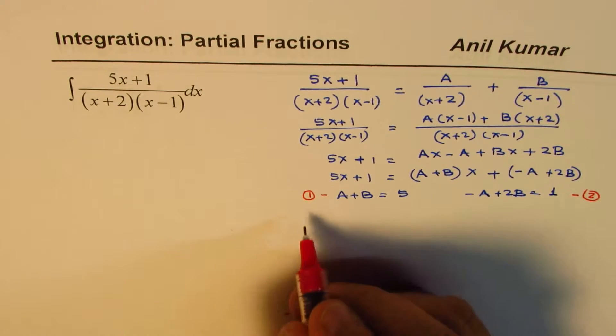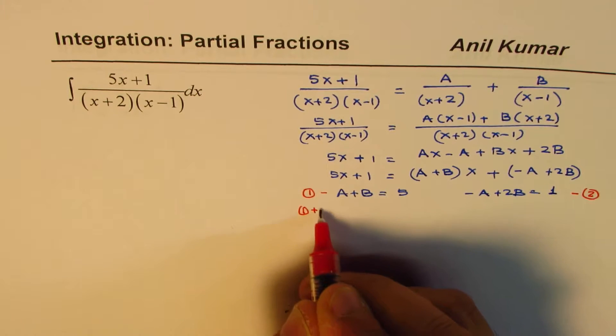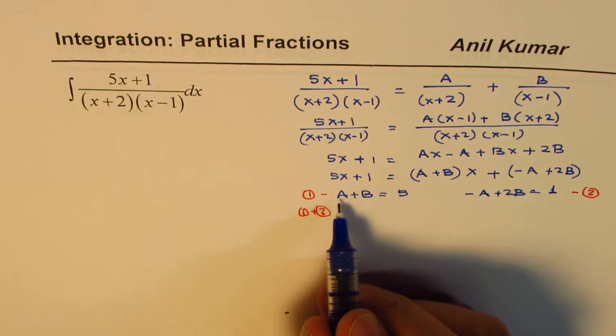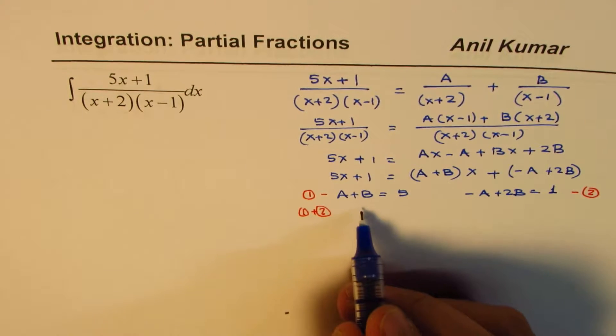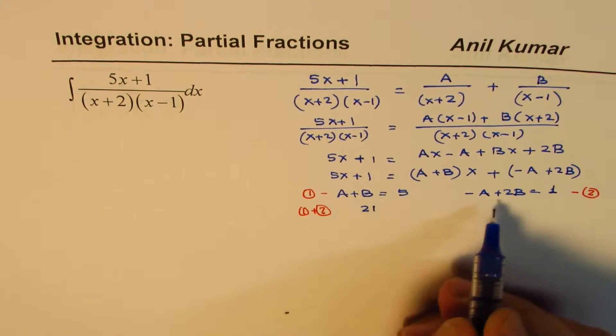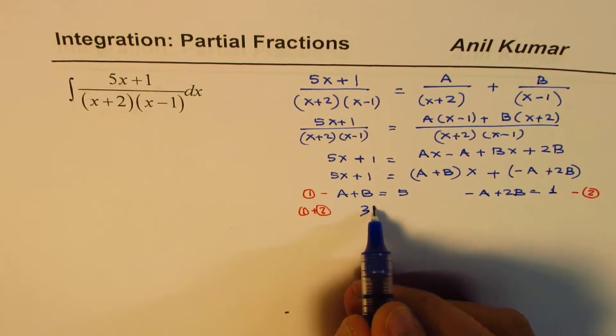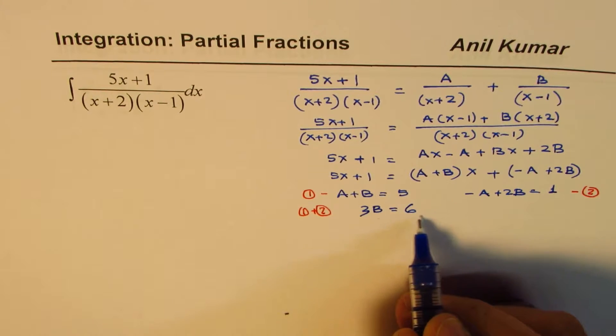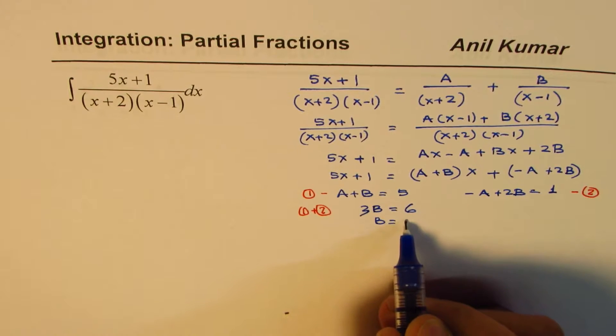If I add these equations, let's say if I do equation 1 plus 2, what do I get? I get a and a become 0, and b, 2b we get. So we get 2b plus b, which is 3b. So 3b is equals to 5 plus 1, 6, and that gives us b as 2. So b is 2 for us.